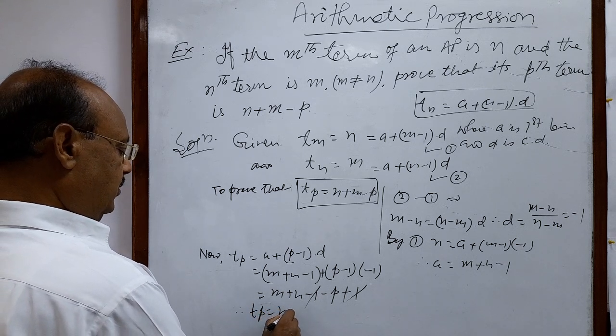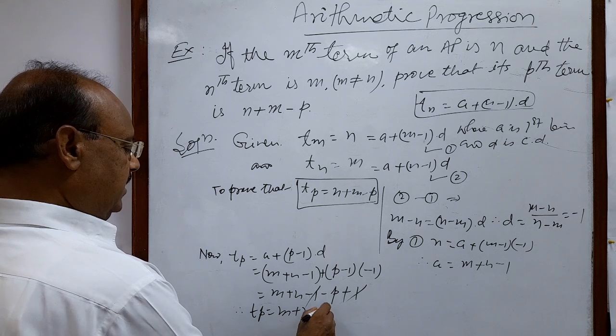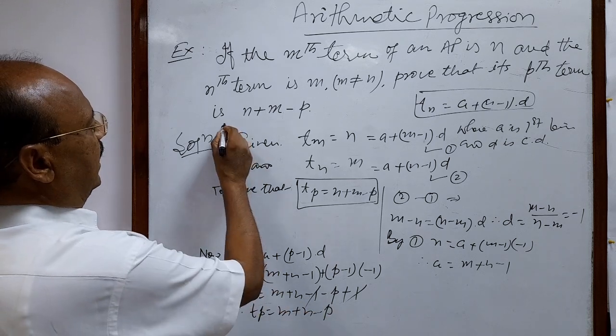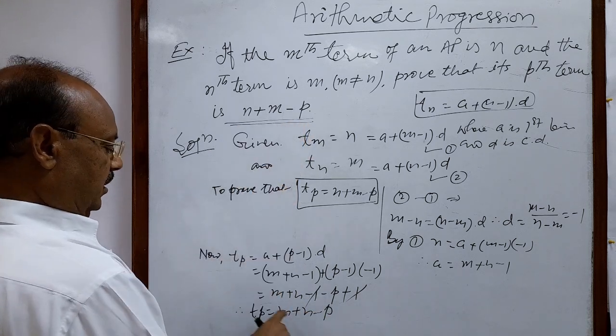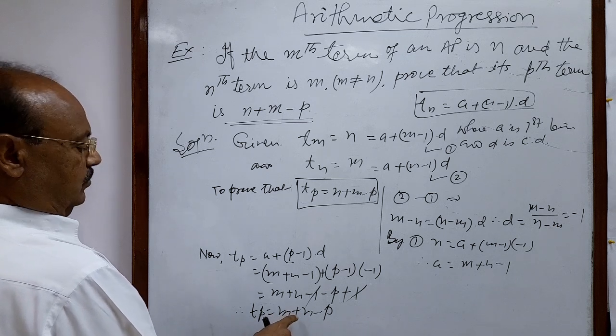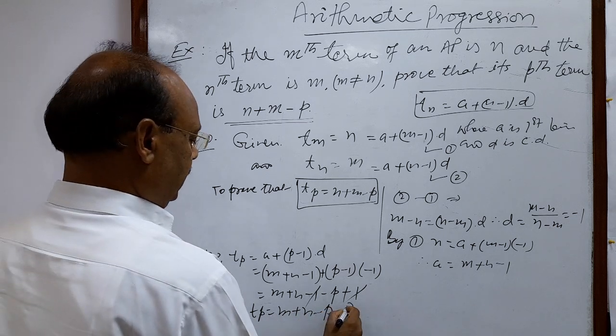Here minus 1 and plus 1 cancel out, so we get the pth term Tp equals m plus n minus p. This is what we had to prove. Hence proved.